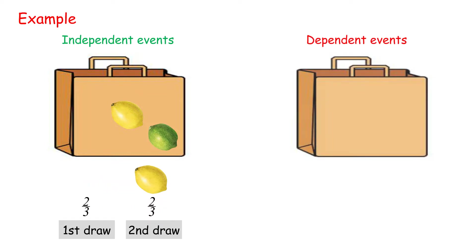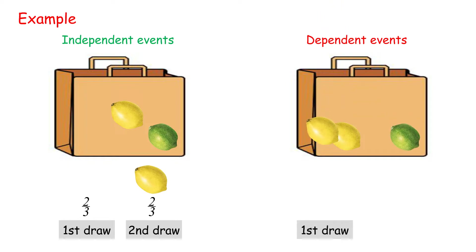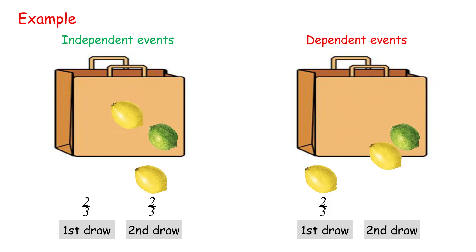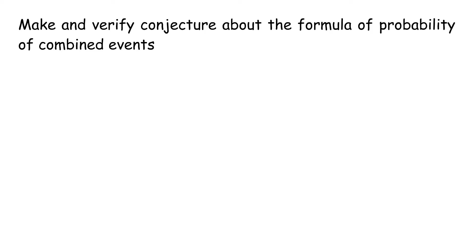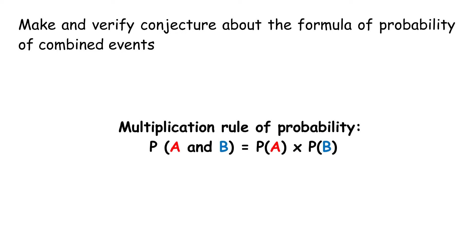Example of Dependent Events: Drawing fruits from a bag without replacement. There are two lemons and one lime in a bag. Randomly draw a fruit from the bag. Without replacing the fruit back, draw a second fruit. The probability of drawing the second fruit depends on the outcome of the first drawing. The probability of the intersection of two independent events A and B: P(A and B) equals P(A) times P(B).